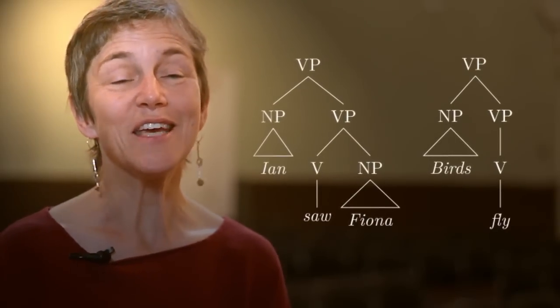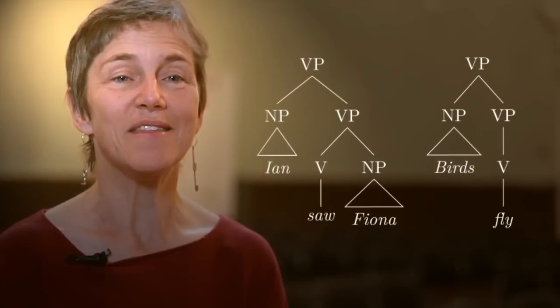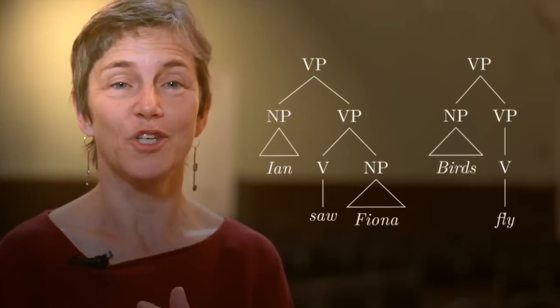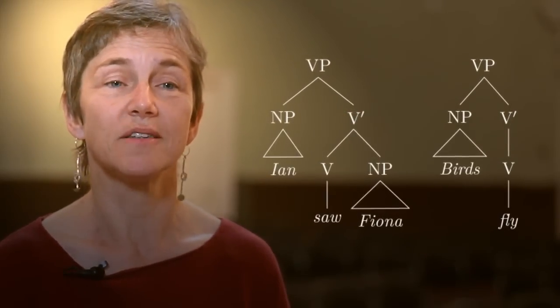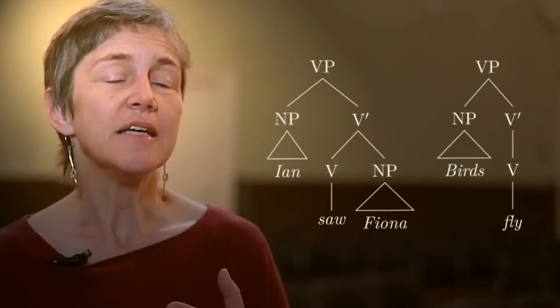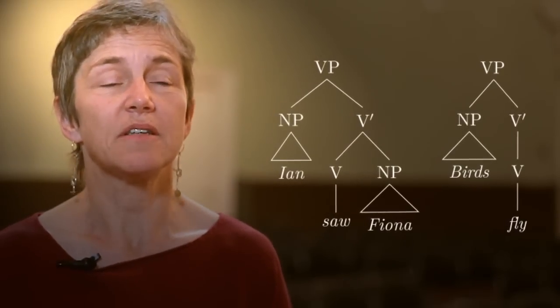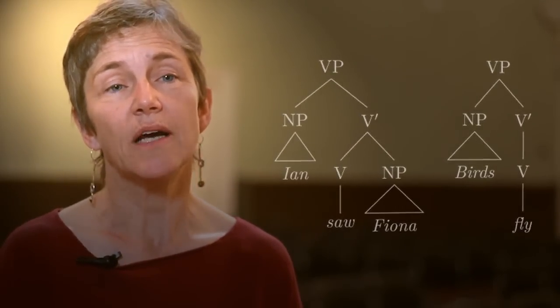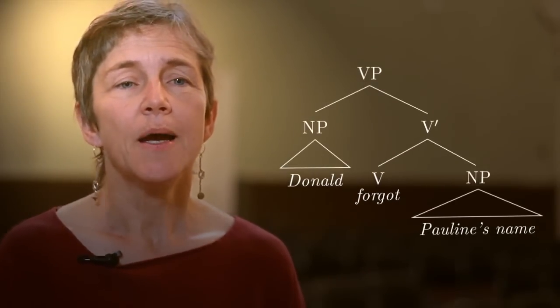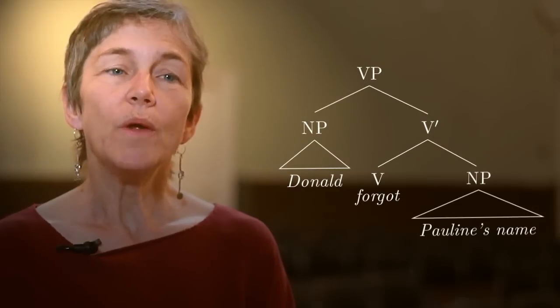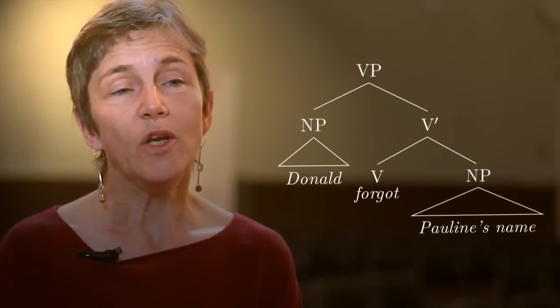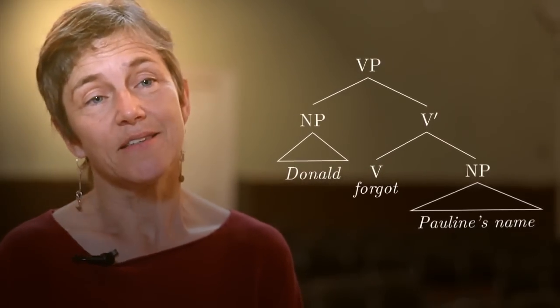Notice that means what we've been thinking of as VPs would now be the smaller projections — those would be V-bars. That is a reasonable hypothesis and it looks like it would allow us to account for at least simple sentences, like 'Donald forgot Pauline's name.' But we may run into problems when we look at slightly more complex sentences.